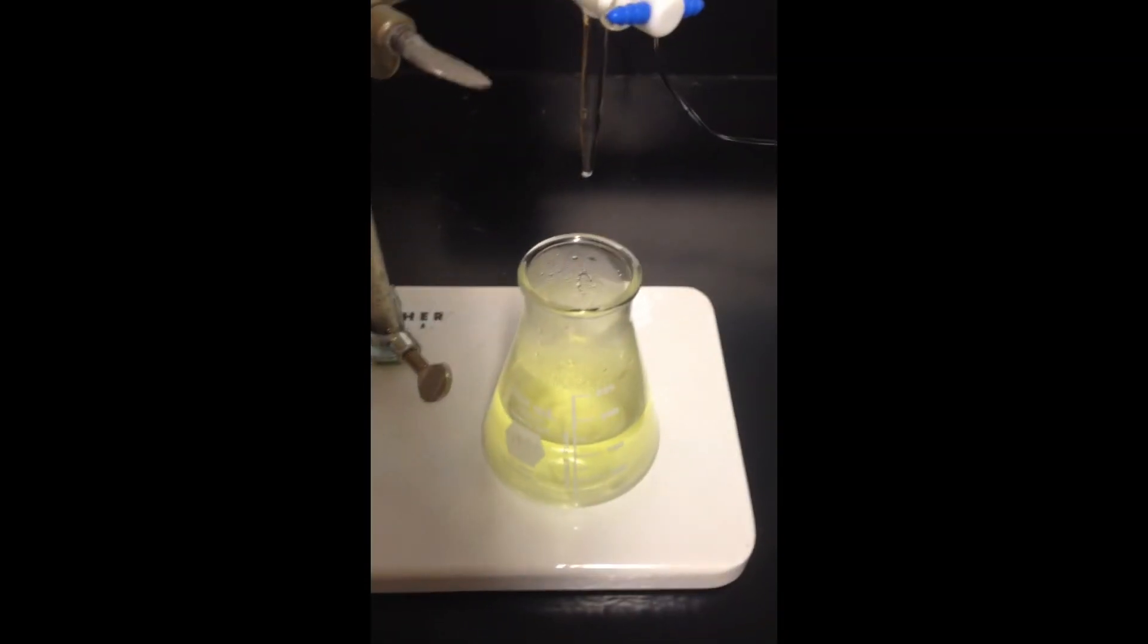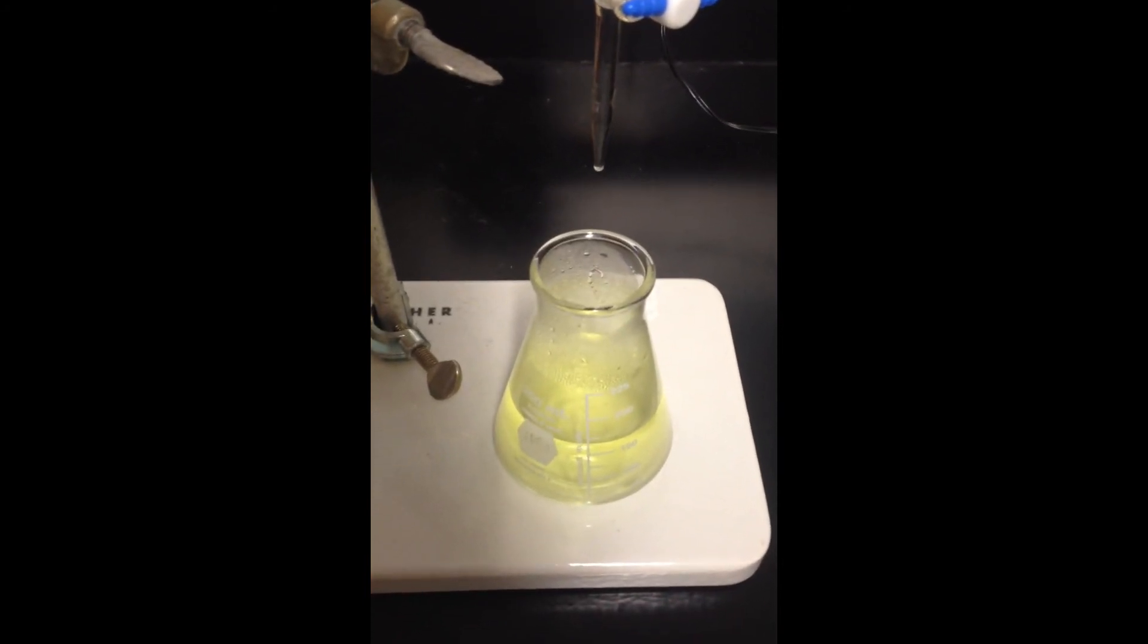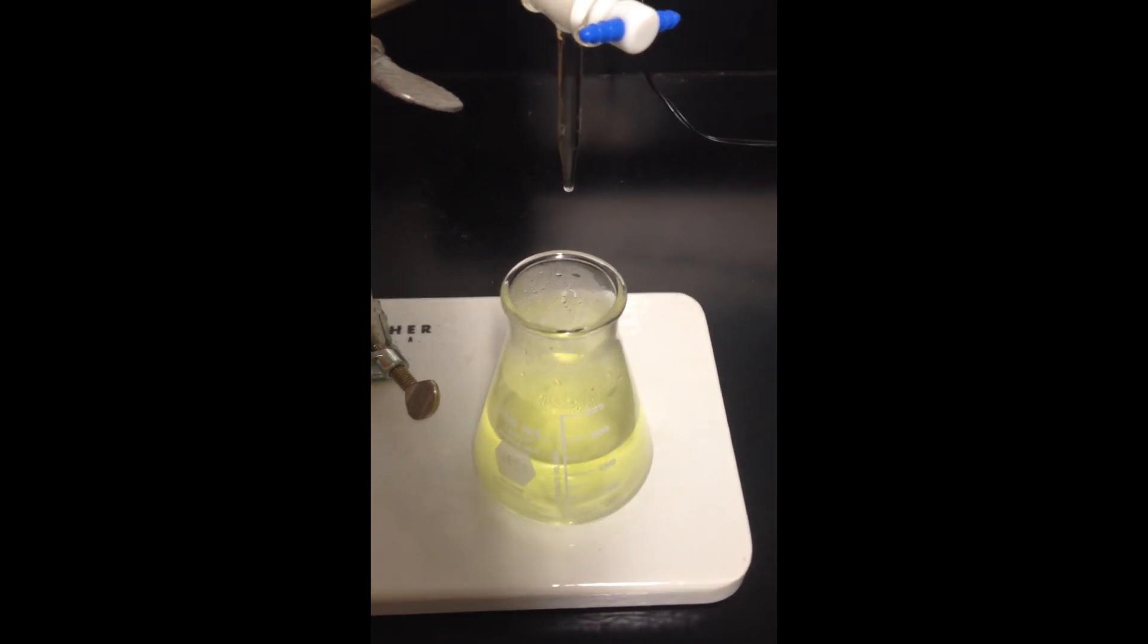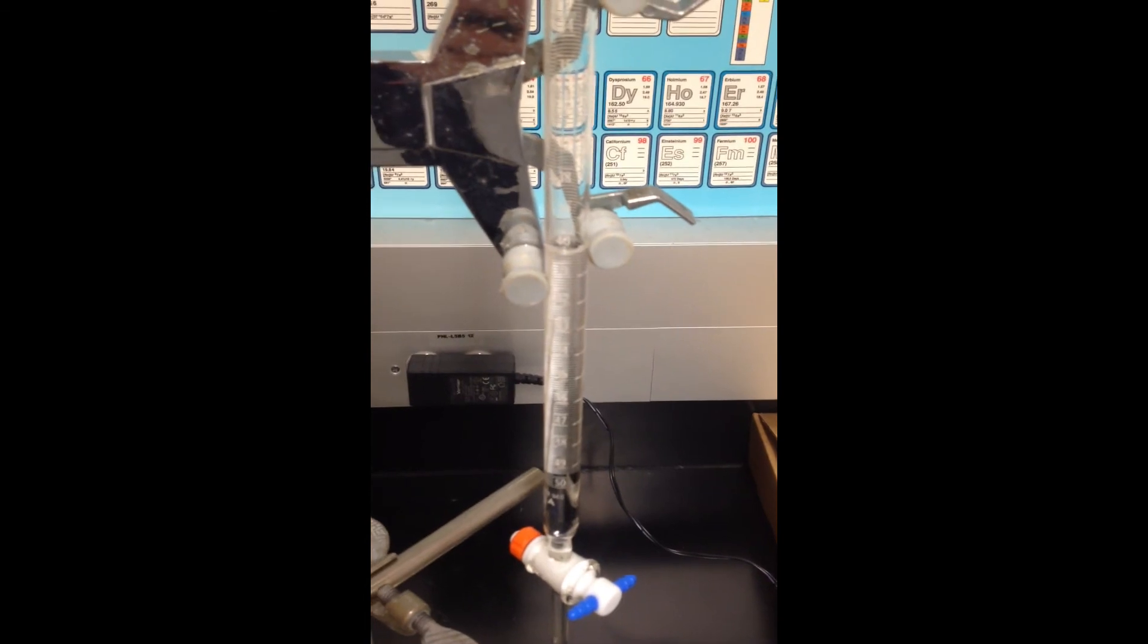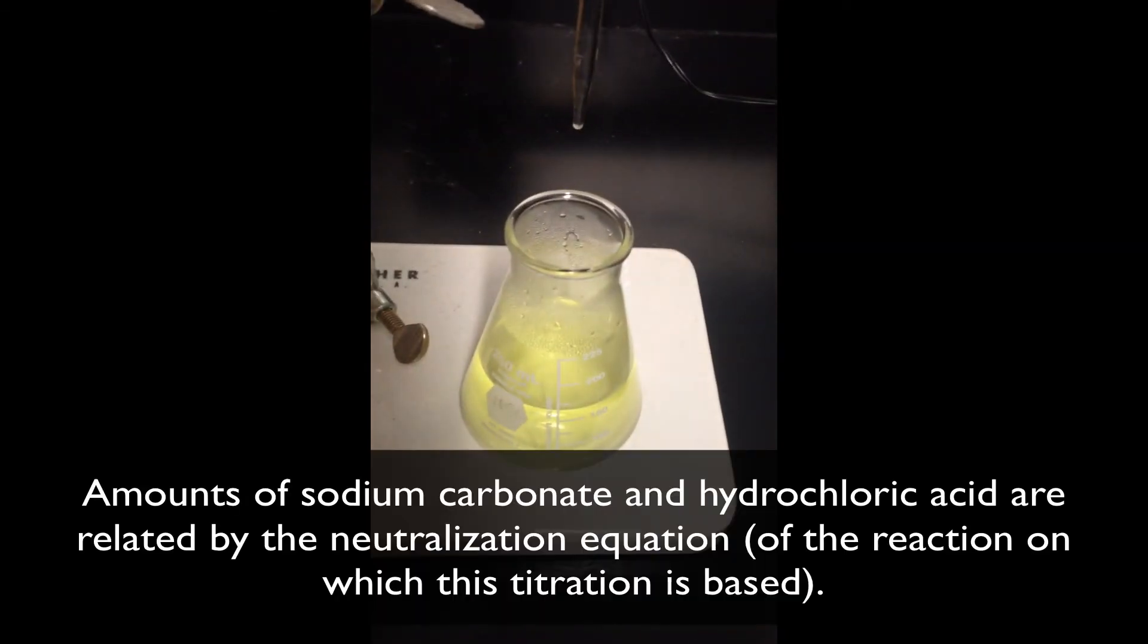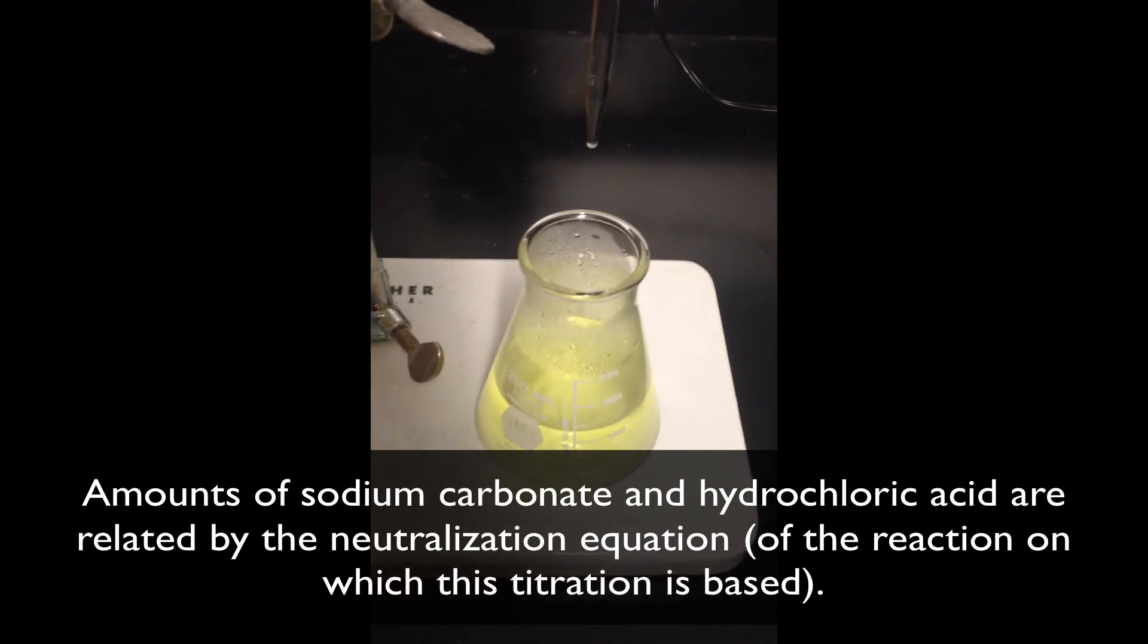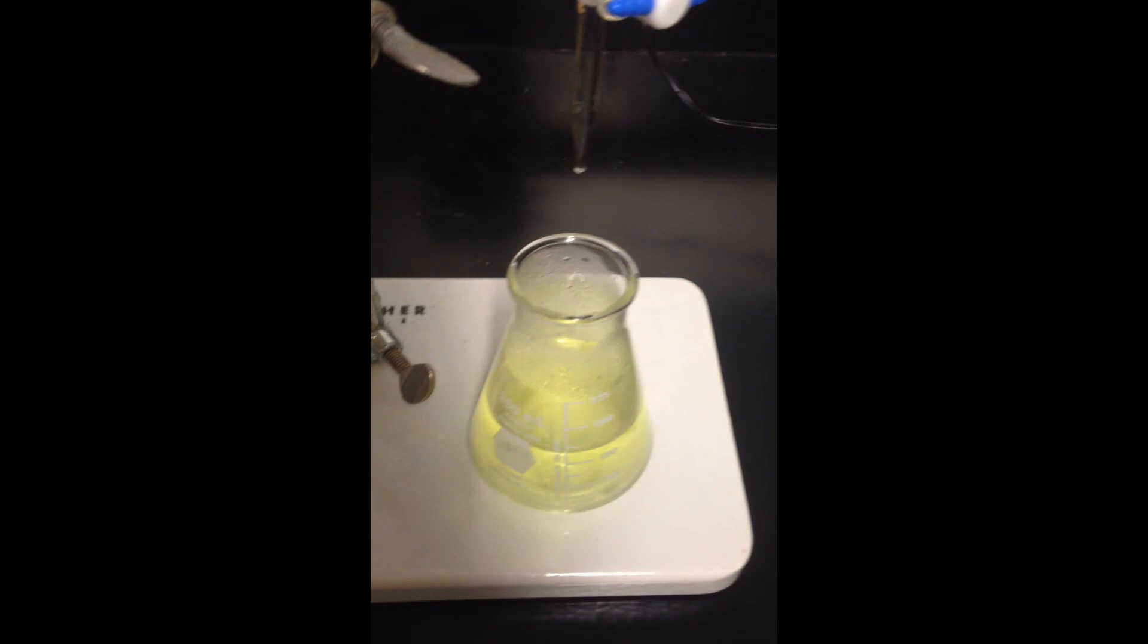The endpoint of the standardization is yellow. The acidic form of Bromocresol green is yellow, so as soon as you see that solution turn yellow, you'll want to record the volume of HCl that you used, and we'll use that volume in conjunction with the mass of sodium carbonate that we measured, that we know is in the analyte flask, to calculate the exact concentration of hydrochloric acid.